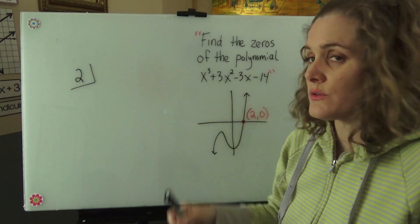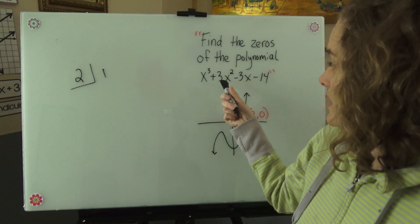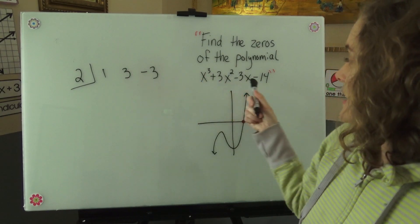I'm going to put next to this two all of the coefficients of our terms. One, three, negative three, and negative fourteen.